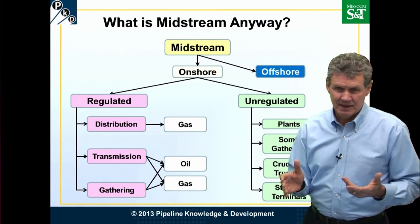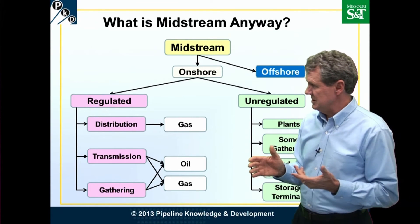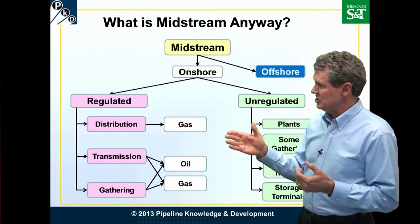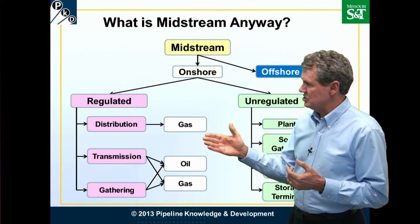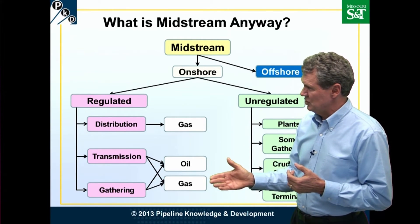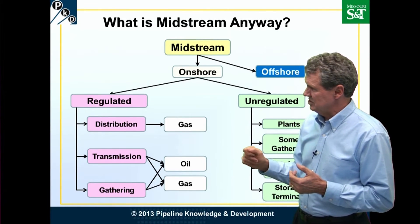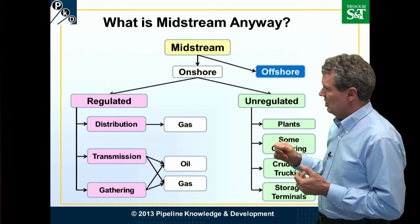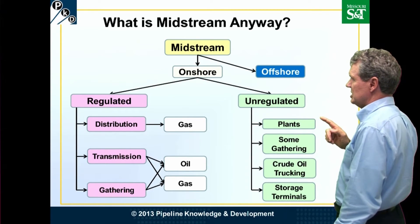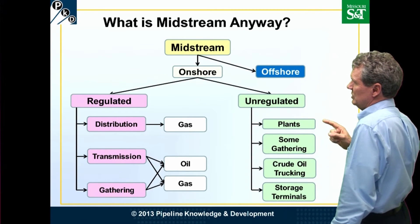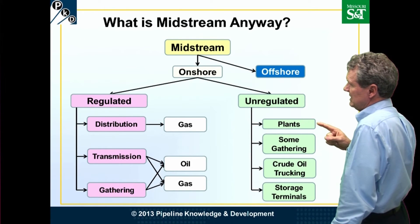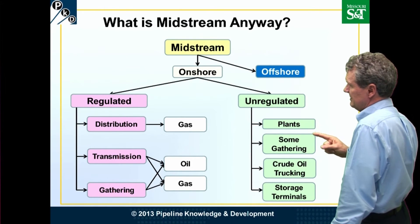The regulated lines are regulated generally by the Federal Energy Regulatory Commission, or by local and state utility or public service commissions. We have distribution lines, transmission lines, and gathering lines — both oil and gas — on the regulated side.